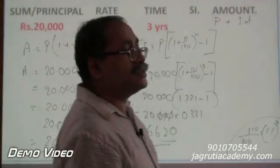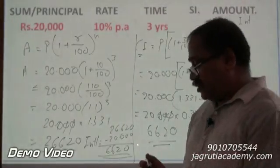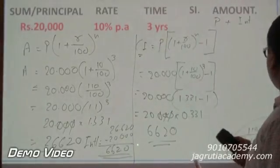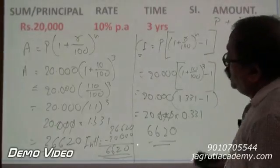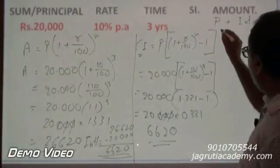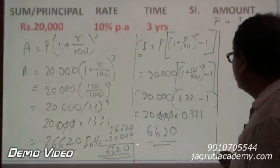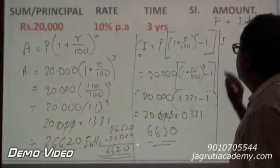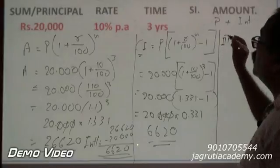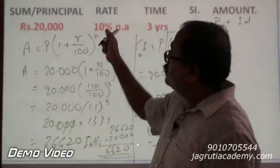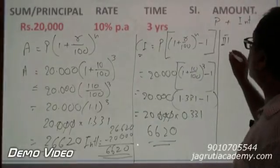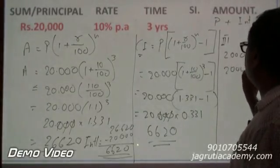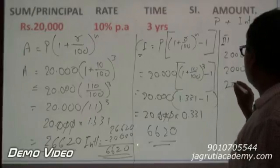Now, we do have the third method which is based on your percentage understanding. That is again what we have already worked out. That is first year - this is third method - which we have already worked out in previous one. So, 10% on 20,000 which is 2,000, second year 2,000, third year also 2,000.